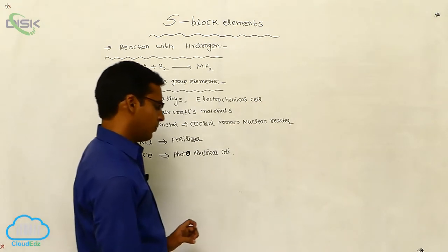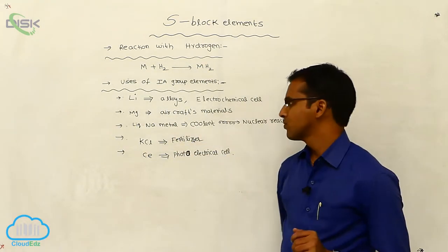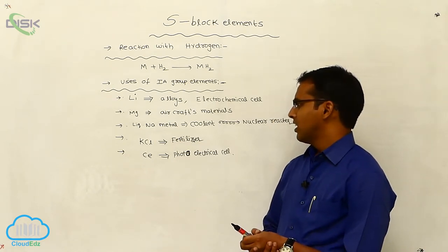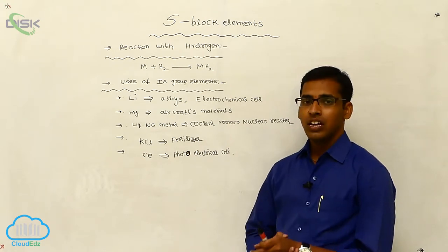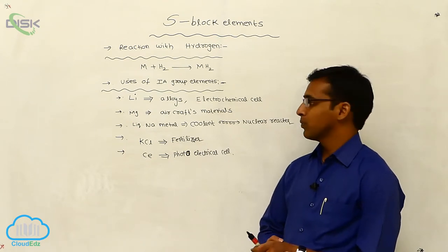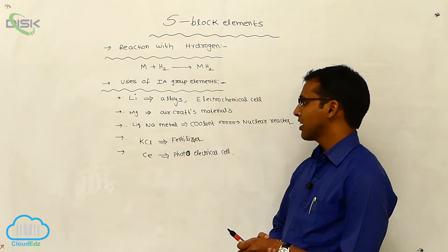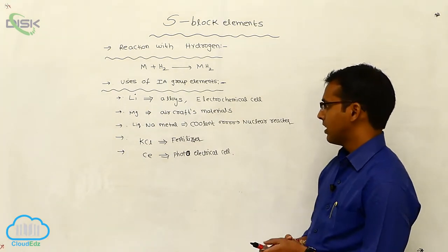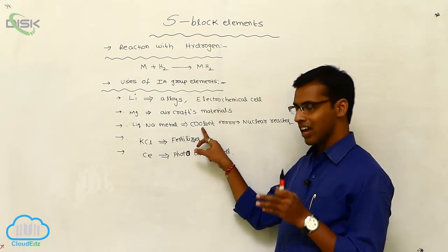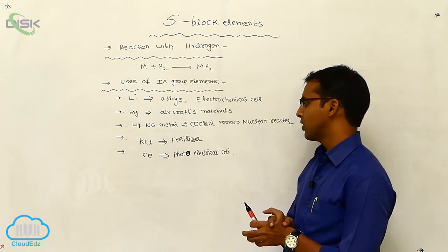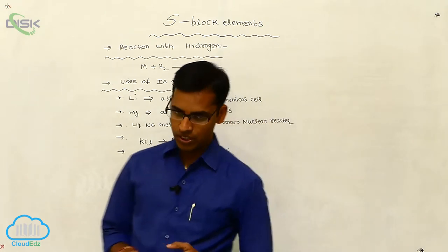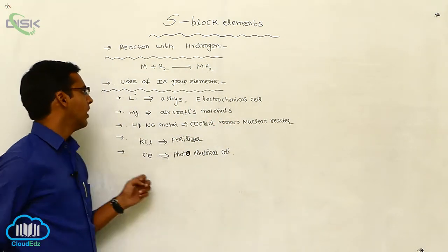To summarize the uses: lithium is used in the preparation of alloys and as an electrode in electrochemical cells. Magnesium is used in aircraft materials. Liquid sodium is used as a coolant in nuclear reactors. Potassium chloride acts as a fertilizer, and cesium metal is used in photoelectric cells.